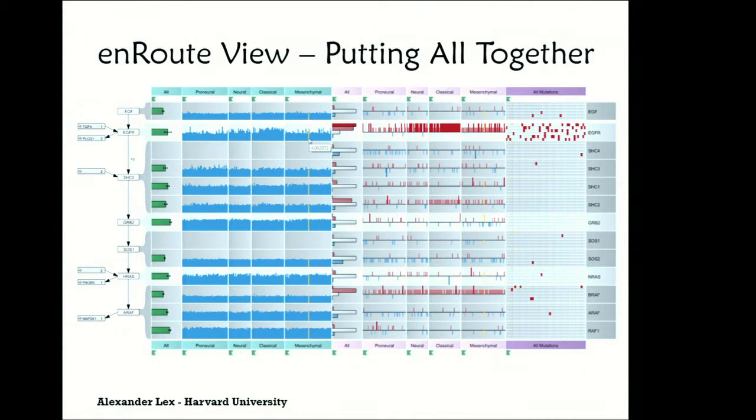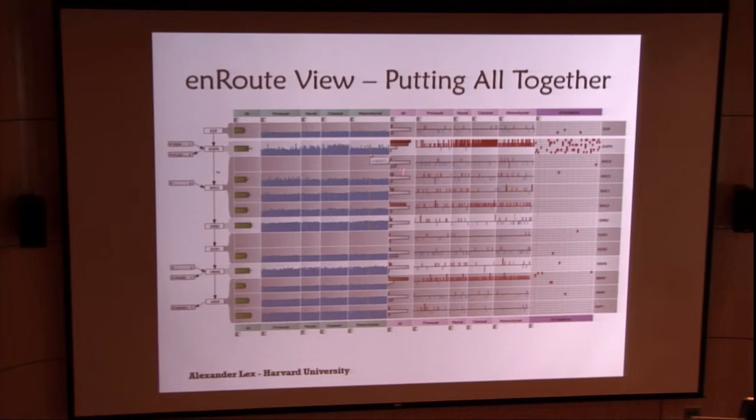So you can see the path I talked about. You can see the abstract bars here. You can see the individual bars. And then here we have copy number data. And here we have mutation data. And what you're seeing here is data from glioblastoma multiform data set from the cancer genome atlas. And you have four different subtypes. So here is proneural, neural, classical, mesenchymal subtypes of this cancer.